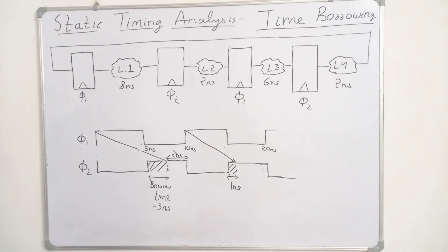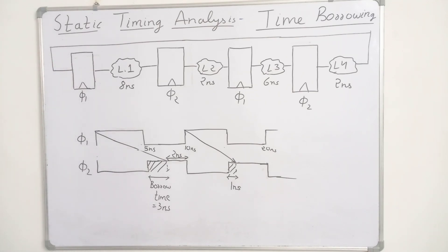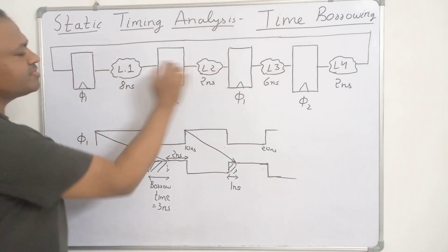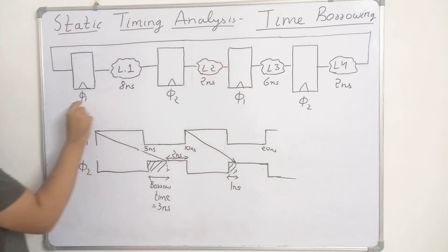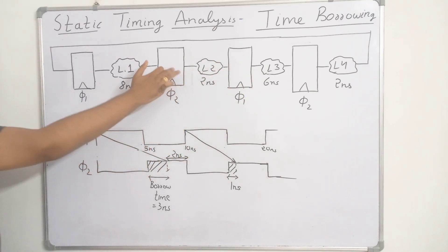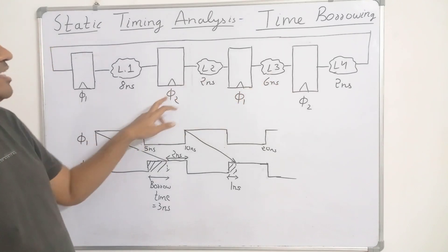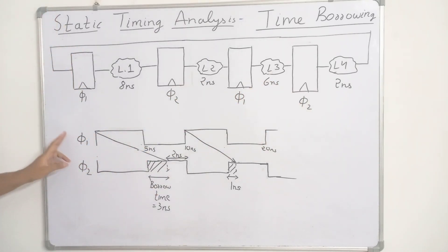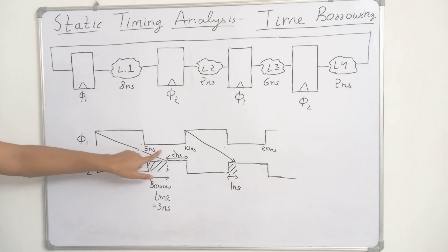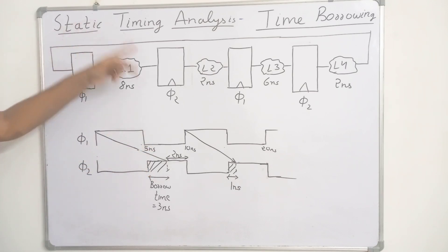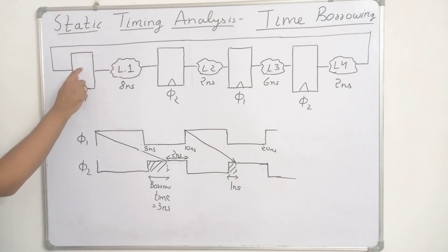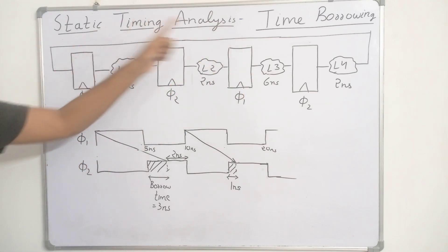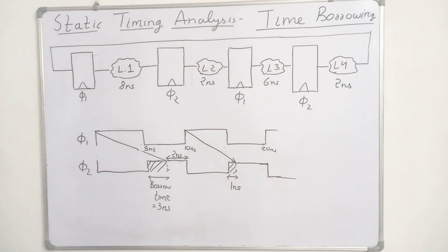In this design, we are using positive level-sensitive latches. The first and third latches are controlled by clock signal Φ1, and the second and fourth latches are controlled by clock signal Φ2. Φ1 and Φ2 are oppositely phased clocks and their clock period is 5 nanoseconds.